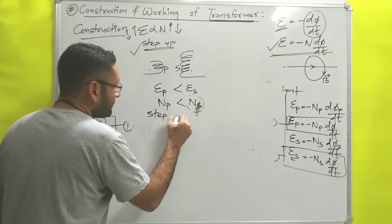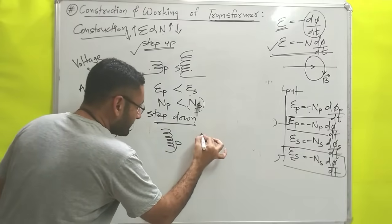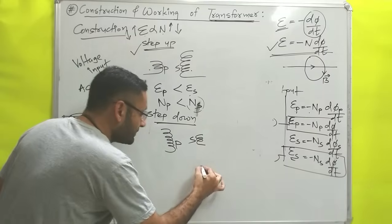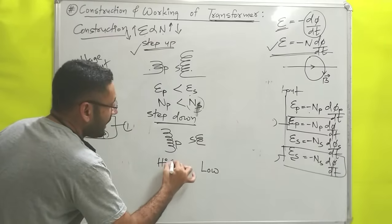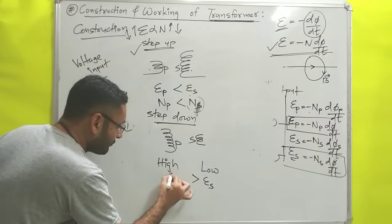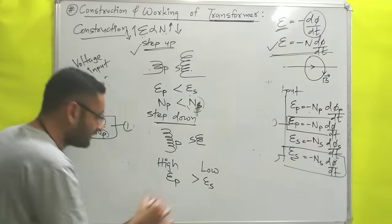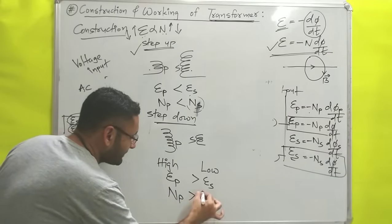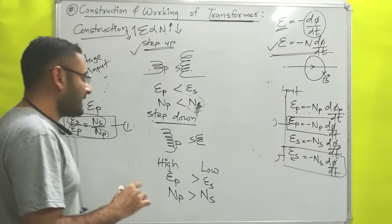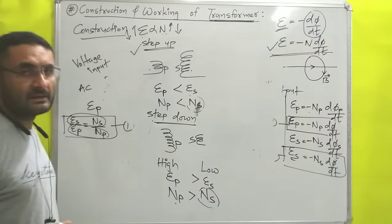Similarly for a step down transformer, its purpose is to decrease the voltage, so low voltage is on the secondary side and high voltage is on the primary side. Since voltage is directly proportional to number of turns, the number of turns in the primary coil must be greater than in the secondary coil. So in a step down transformer, NP is always greater than NS.